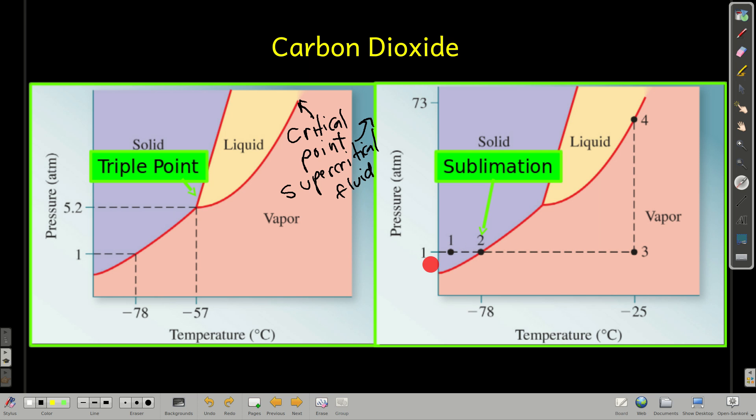It can only exist as either a vapor or a solid. Now, we could, let's say, vaporize it, sublimate it, and then increase the temperature up to minus 25 Celsius or so, and then increase the pressure, and then we can make it into a liquid if we wanted to.